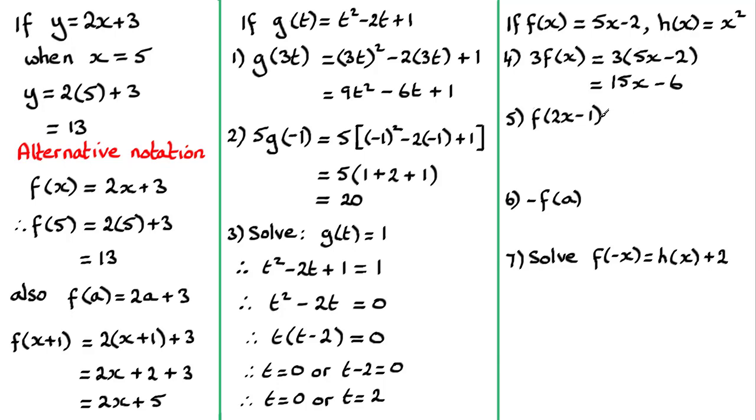For f of 2x minus 1, all we need to do is replace the x then with 2x minus 1. And doing that, you're going to get 5 times all of 2x minus 1 minus 2. Expand the bracket out, group together any like terms, you're going to get 10x minus 5 minus 2. Grouping the minus 5 and minus 2 gives you 10x minus 7.